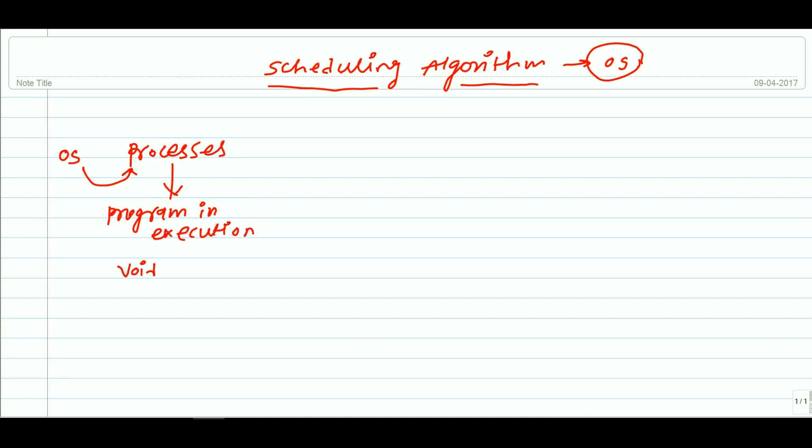That program may be in different languages like C, C++, Java, anything. Now this program is nothing but one process. Obviously, to process this particular program or to execute this particular program,